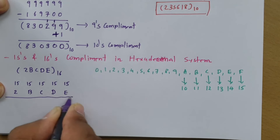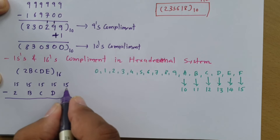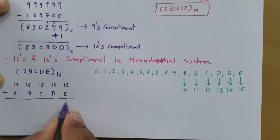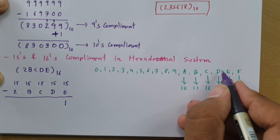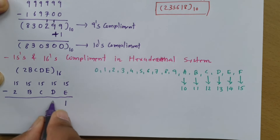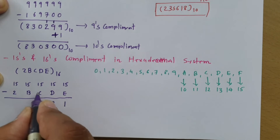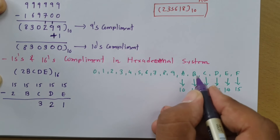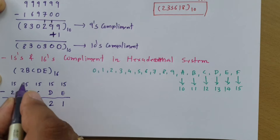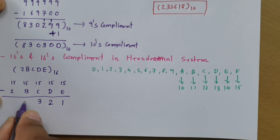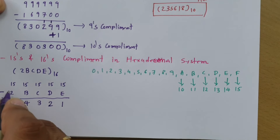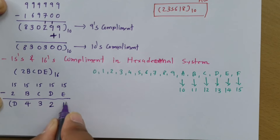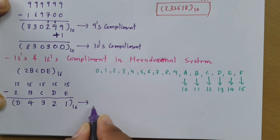Performing the subtraction: 15 minus E (E equals 14) is 1; 15 minus C (C equals 12) is 3; 15 minus B (B equals 11) is 4; 15 minus 2 is 13, and 13 is equivalent to D. So this is the 15's complement.